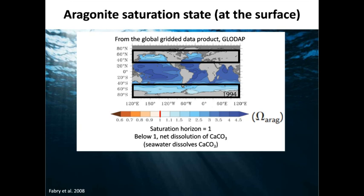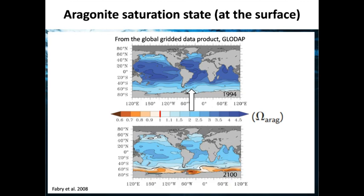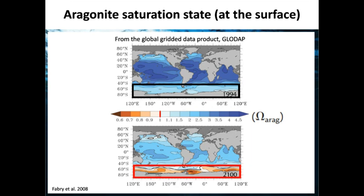That was the situation in 1994. Studies predict that by 2100, especially in the Antarctic, the saturation state will go below one — meaning undersaturation and net dissolution rather than calcification. This will make it very hard for certain organisms to survive there. The extent of change depends on our behavior and how much we reduce our emissions. Saturation states predicted for future surface waters historically only occurred in much deeper water.